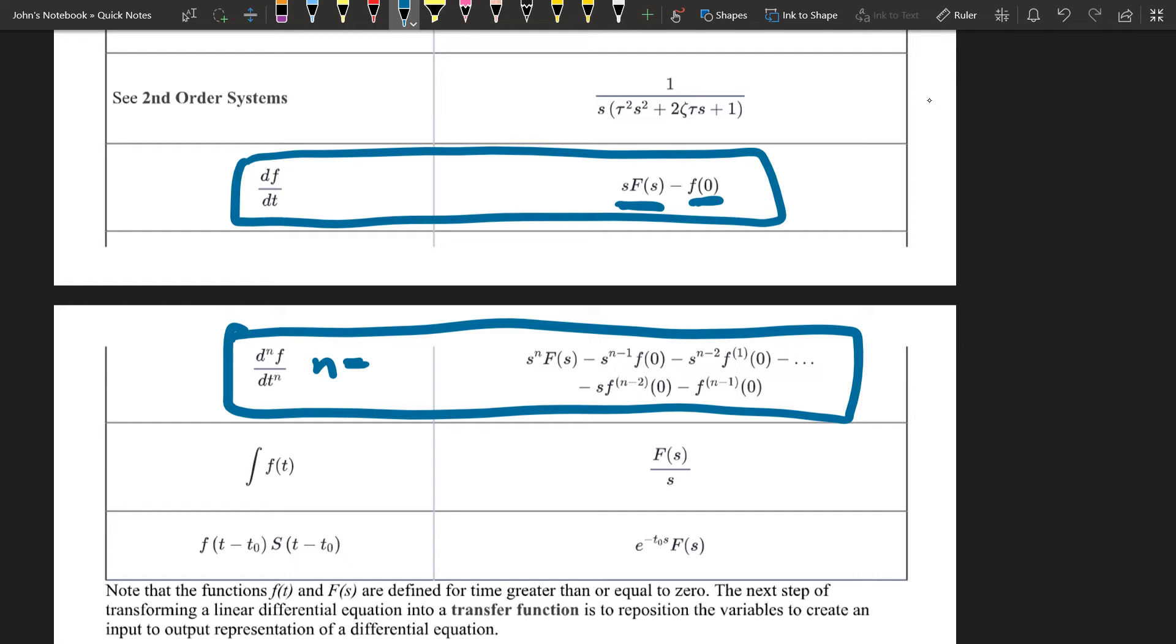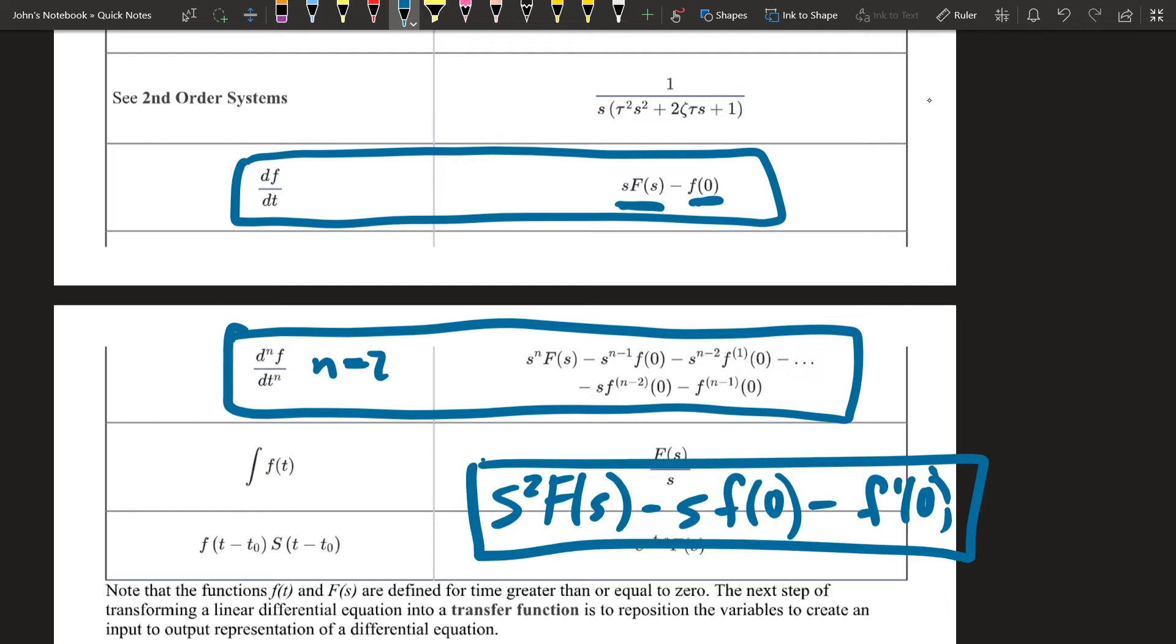Let's go ahead and apply this to this second derivative. If n equals 2, then I plug this in and come up with s squared times f of s, minus s times f of 0, and then minus f prime 0, the first derivative. Let's go ahead and use this one right here to figure out which answer is correct.